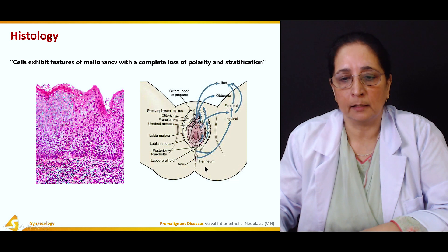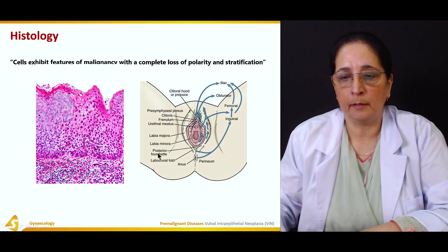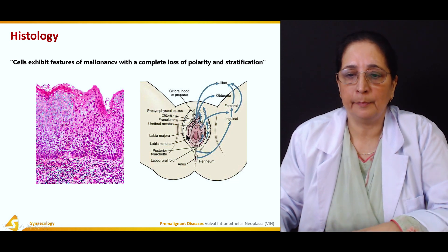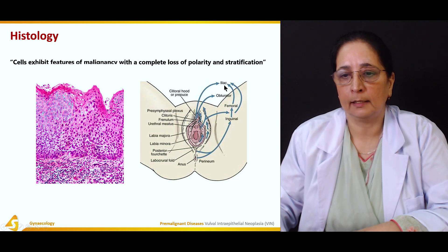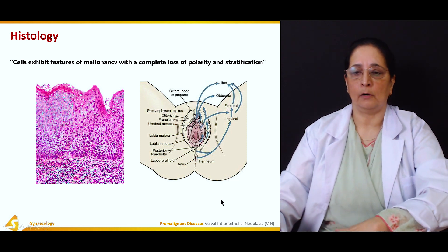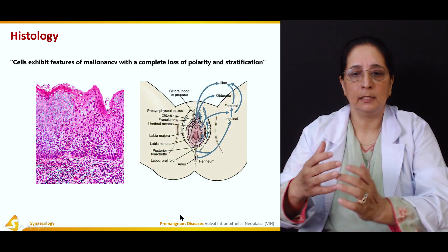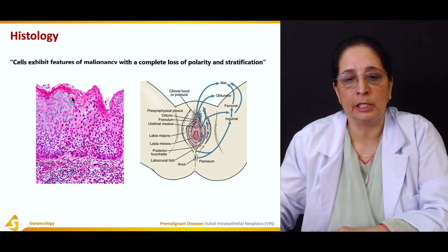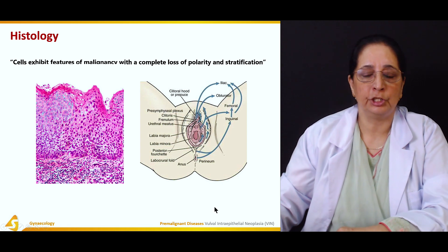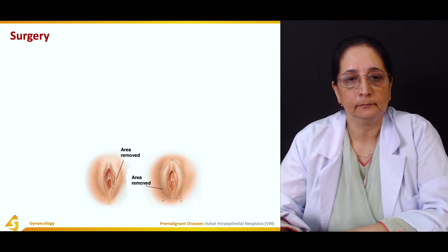This diagram shows different structures of the perineum: the anus, labiocrural fold, labia minora, labia majora, urethral meatus, and clitoris. The nerve supply of the perineum includes the obturator, iliac, femoral, and inguinal nerves. Another diagram shows how cells appear as they progress toward malignant changes, with loss of stratification and polarity.